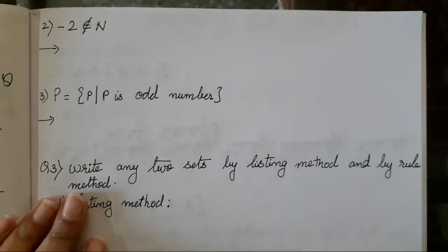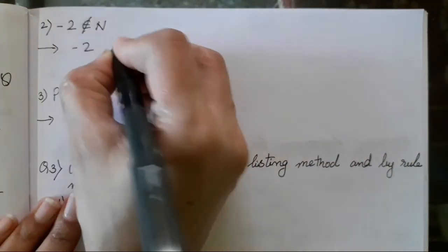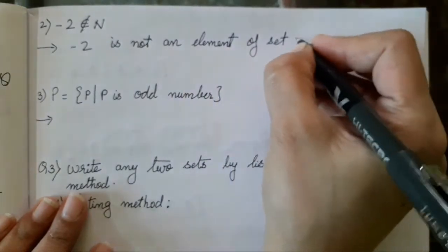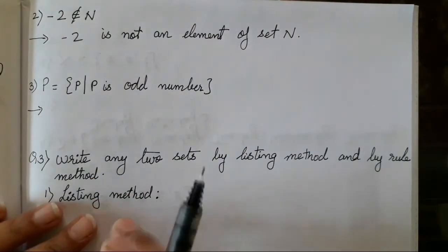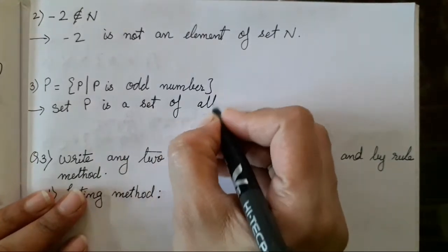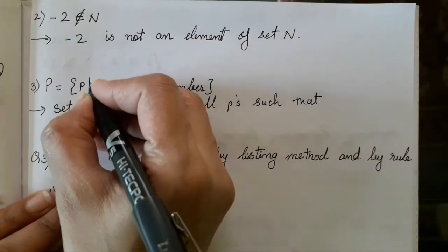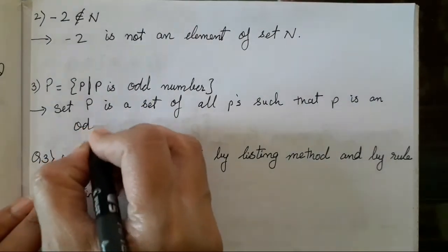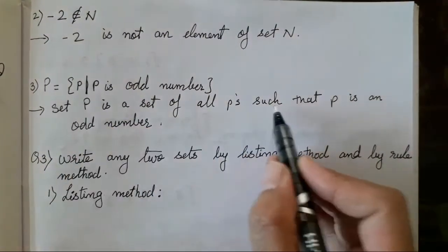Next question. So when this sign is there, we say it's not an element. So how are you going to write - minus 2 is not an element of set N. Next question is P such that P is an odd number. So set P is a set of all P's such that - so this line is known as, read as, such that P is an odd number. Isn't it easy to read it? So this line is supposed to be as such that.